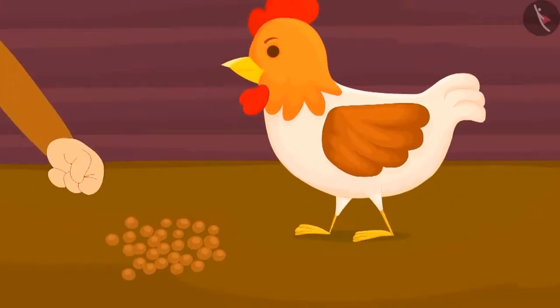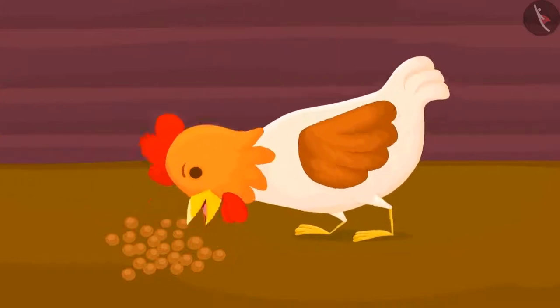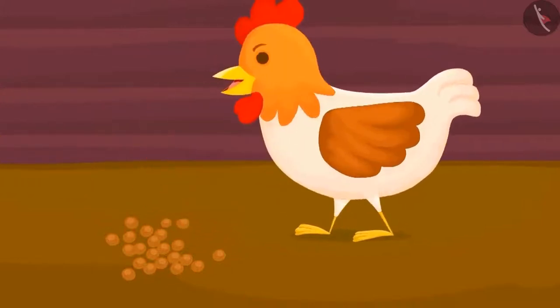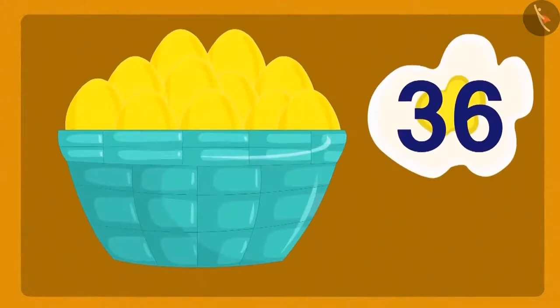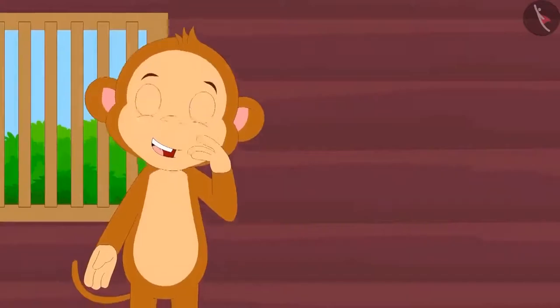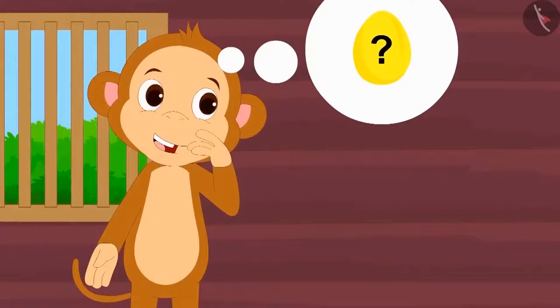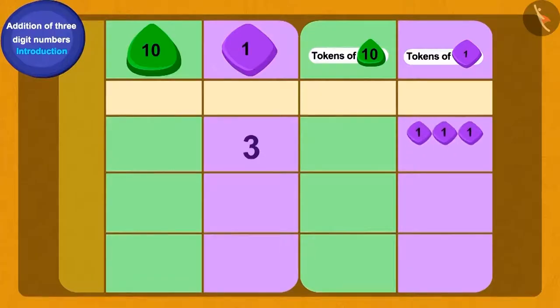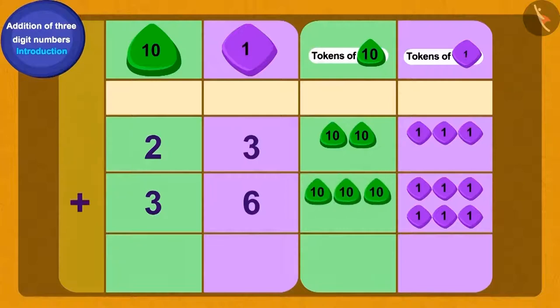Baban fed the hen daily for a week and in a week, the hen laid another thirty-six eggs. Baban is thinking, how many gold eggs he has now? Let us help him. To find the total number of gold eggs, we will add thirty-six to twenty-three.